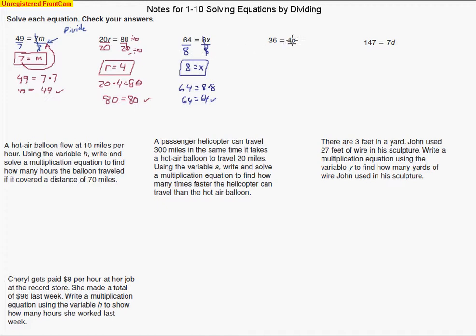Another one like that. 4 is being multiplied by p, so we're undoing that multiplication by dividing. We'll divide by 4 on both sides. 36 divided by 4 does make 9, and so p equals 9. Let's check our answer. 36 equals 4 times 9. Well, 4 times 9 is 36, and so those two numbers do agree. So yes, p is 9.